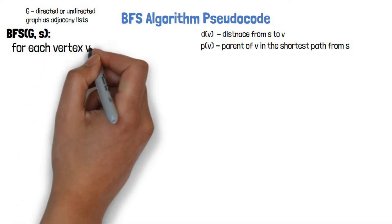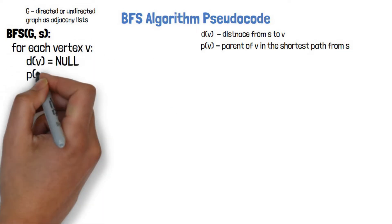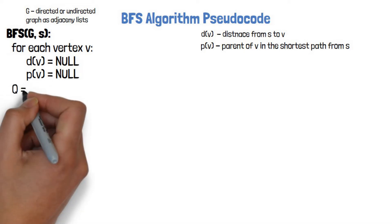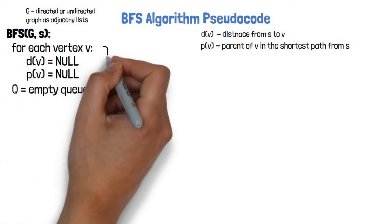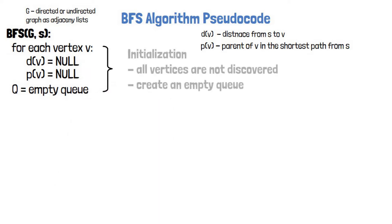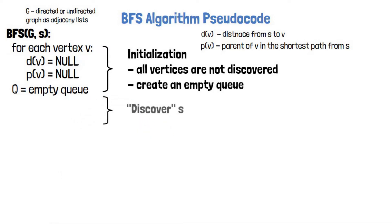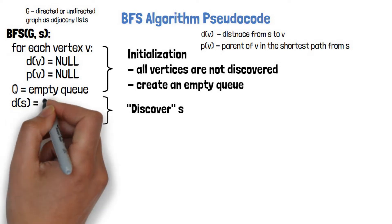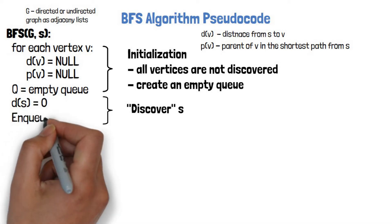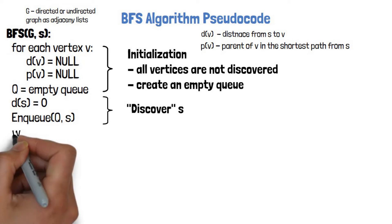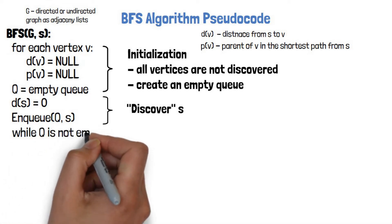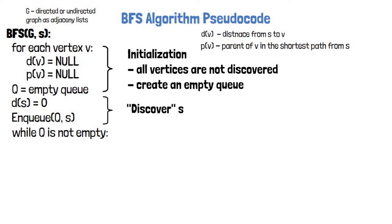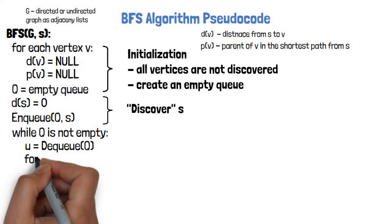At start, we initialize all vertices to have null distance and null parent. We also create an empty queue data structure. We then start the graph search from S, as if we discovered it — we set the distance from S to itself to zero and add it to the queue. Now, while the queue is not empty, we dequeue the next vertex in first-in, first-out order and store it in a variable called U. Then we go over its neighbors.